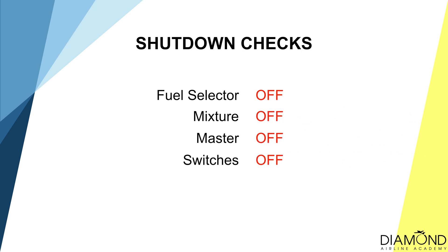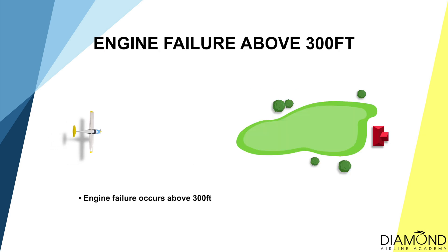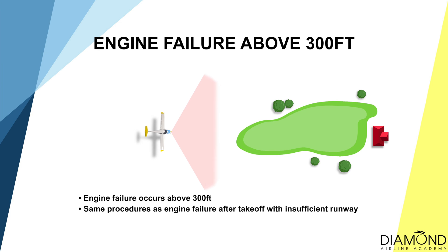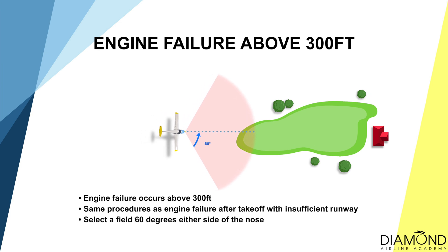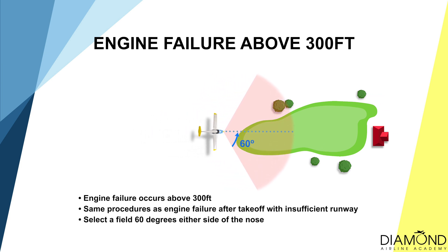If the engine failure occurs above 300 feet, the same procedure applies as when it happens below 300 feet. The difference is the area of field selection will be increased from 30 degrees either side to 60 degrees.